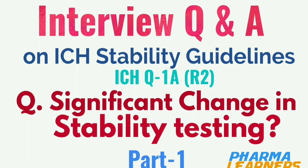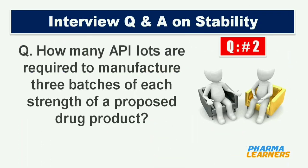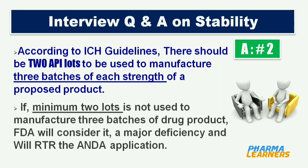Now the next question is: how many API lots are required to manufacture three batches of each strength of a proposed drug product? According to ICH guidelines, there should be two API lots used to manufacture three batches of each strength of a proposed drug product. If a minimum of two lots are not used, FDA will consider it a major deficiency and will refuse to receive the ANDA application.